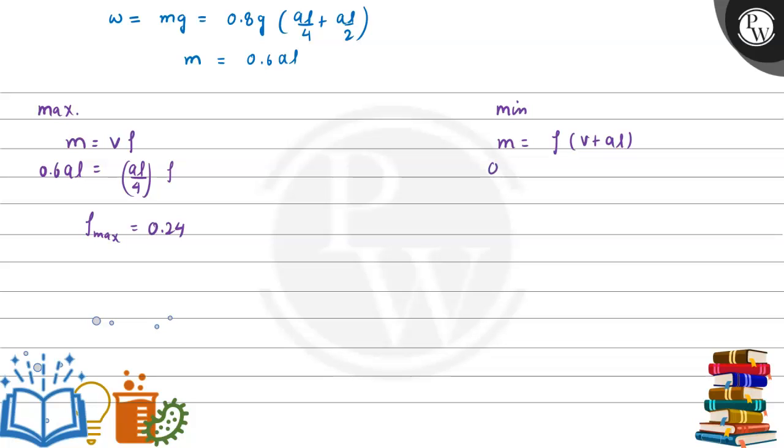Mass here is 0.6 AL equal to density multiplied by volume, this is AL by 4 plus AL. Now density will be minimum in this case and value of minimum density will be 0.048.